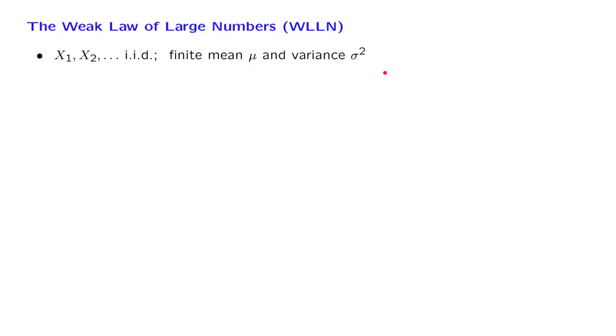We start with some probability distribution that has a certain mean and variance, which we assume to be finite. We then draw independent random variables out of this distribution, so that these Xi's are independent and identically distributed, i.i.d. for short.